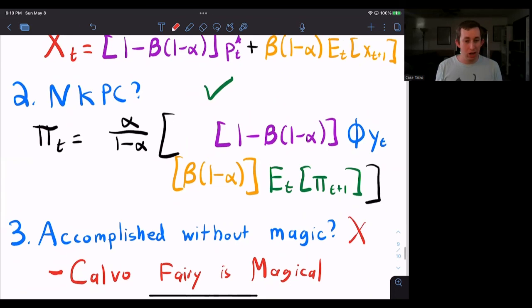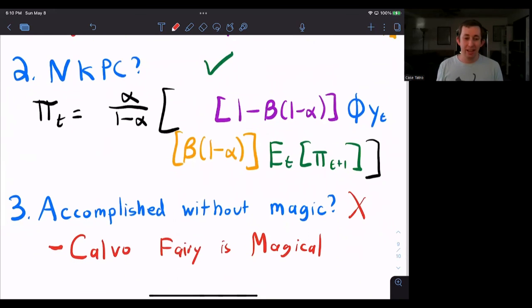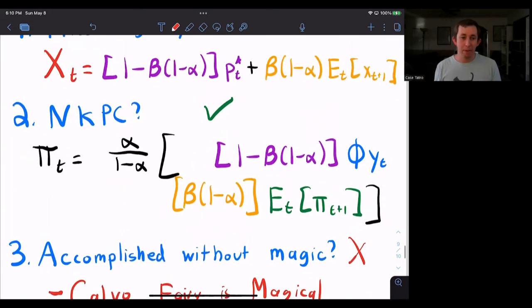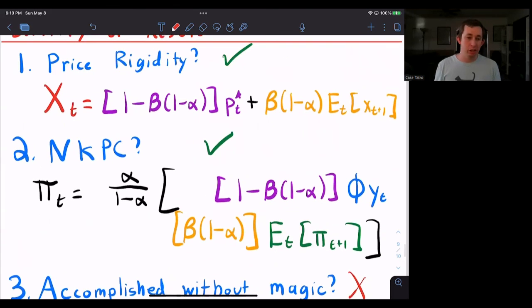Were we able to accomplish these things without magic? Absolutely not. We have a Calvo ferry. A Calvo ferry is magical. This is not super realistic, but we really wanted these first two results. And that's kind of the purpose of the Calvo model.